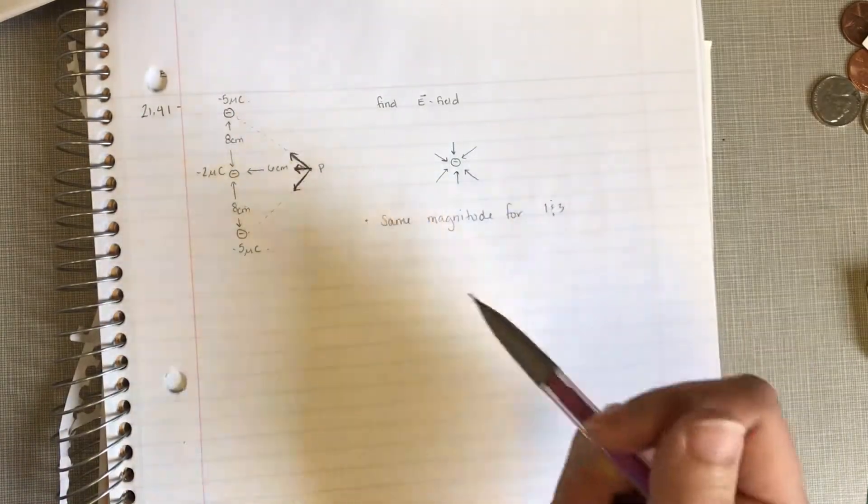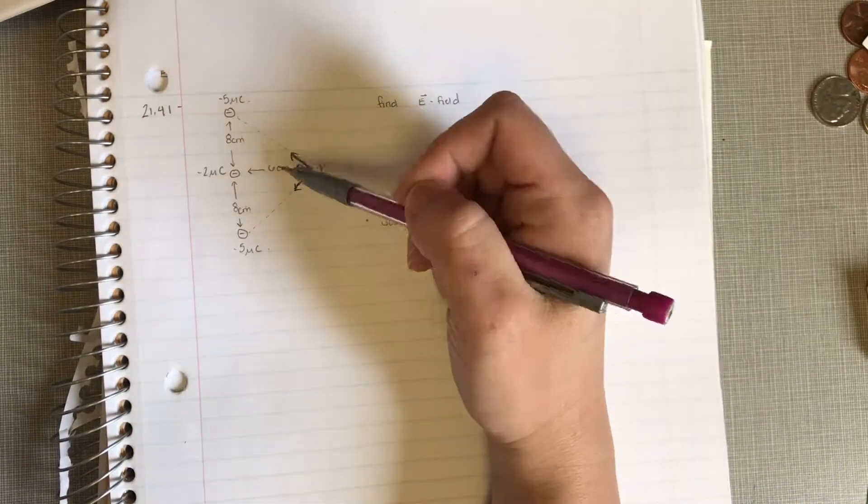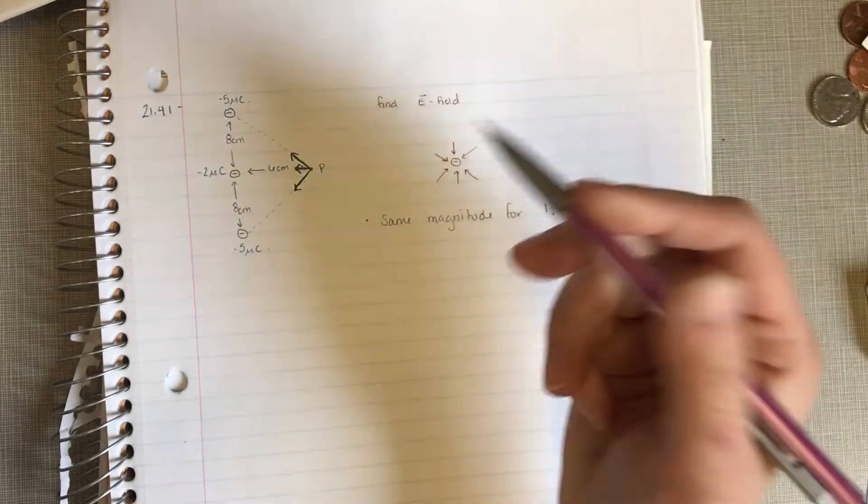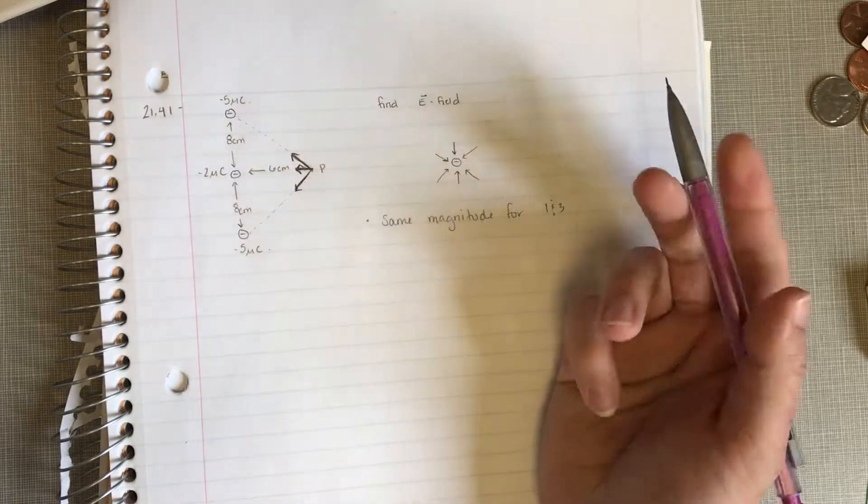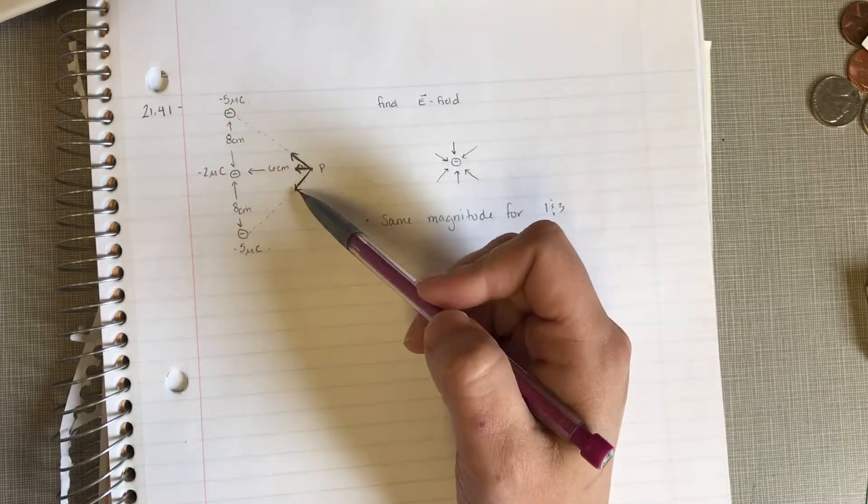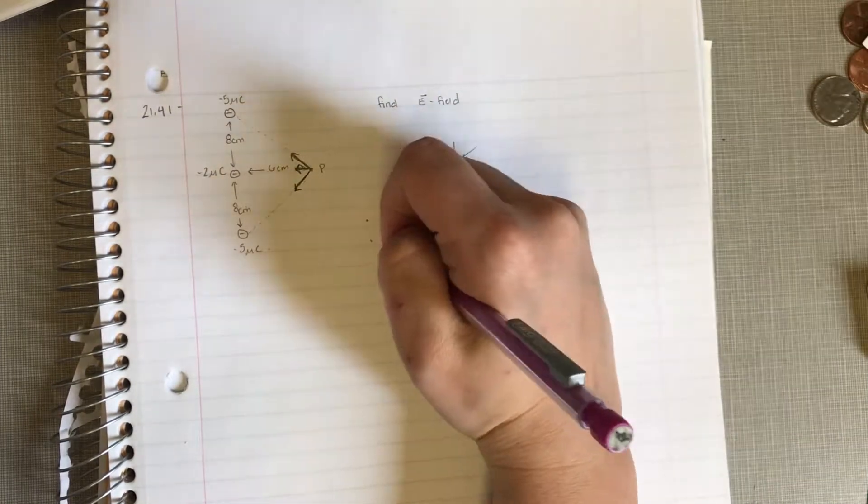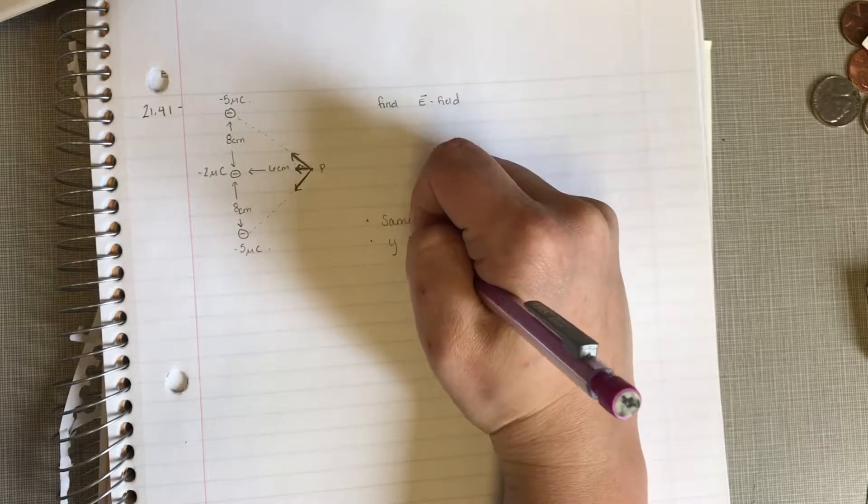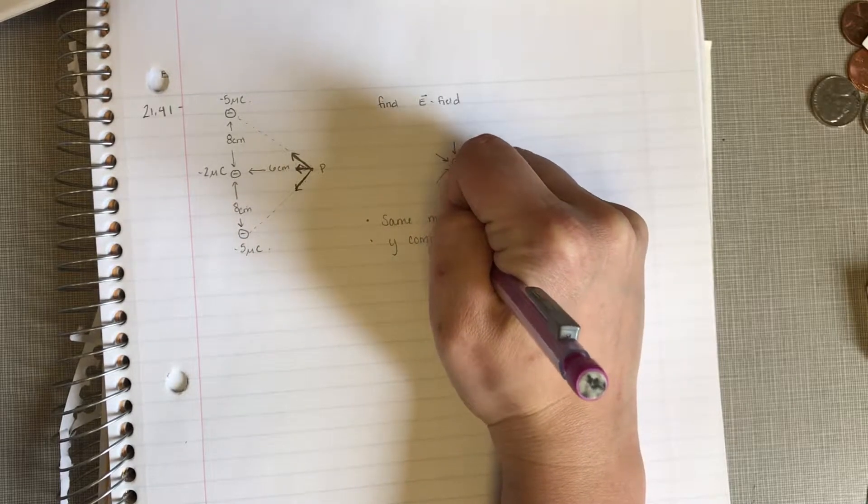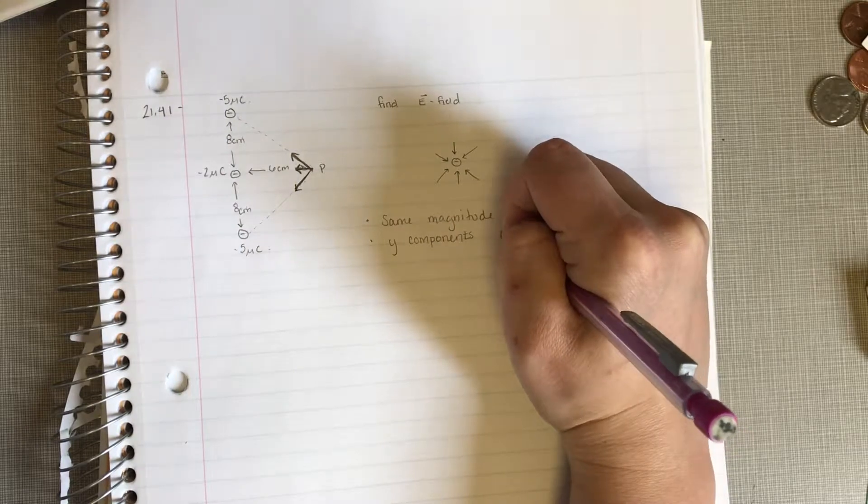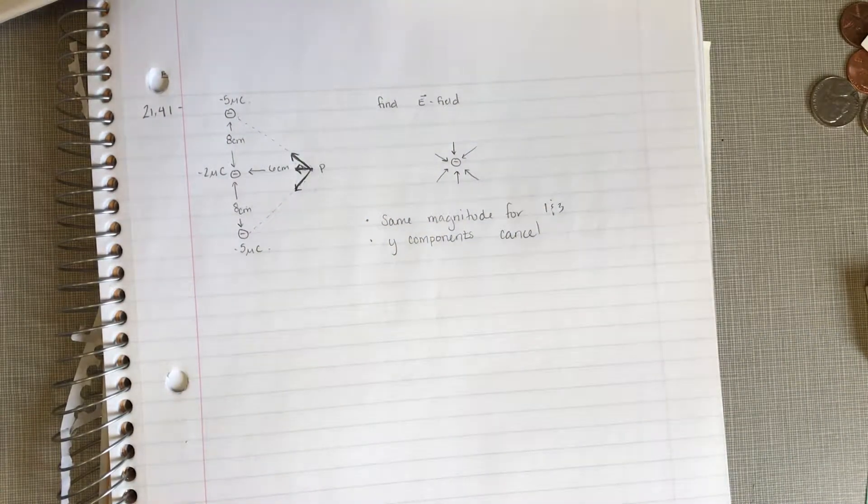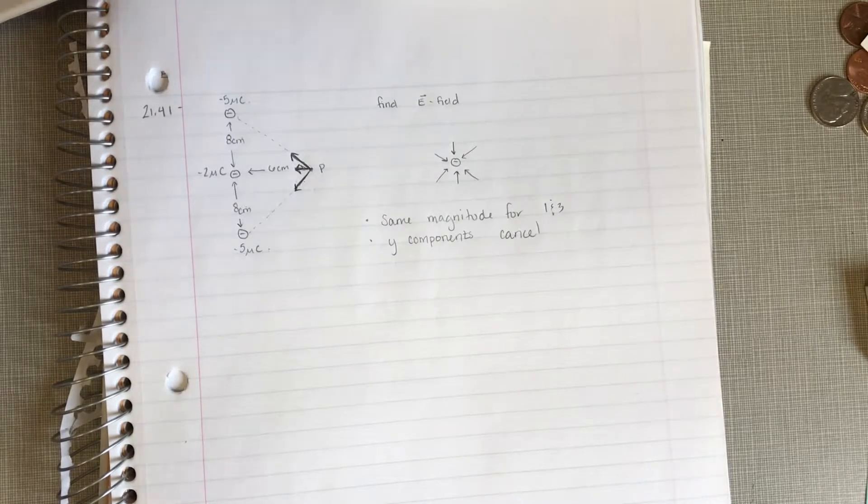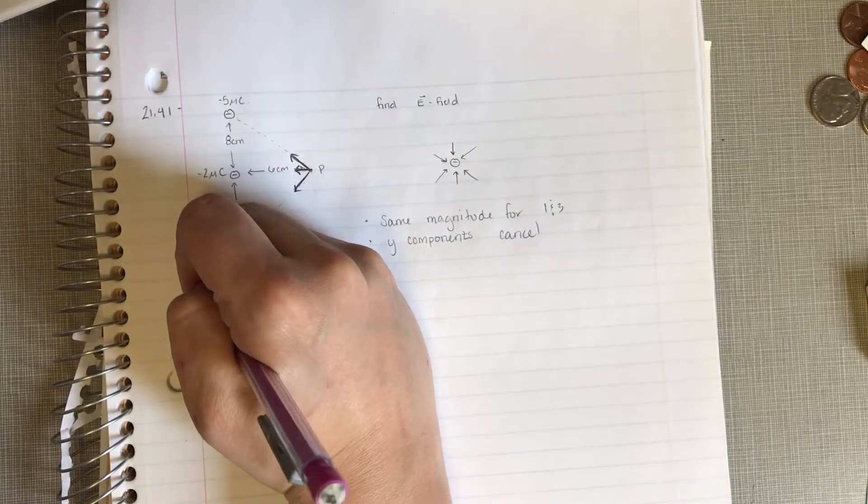So we know that they're going to have the same magnitude. So now because they have the same magnitude and they're pointing in the same direction, we can make the reasonable assumption that these two y components are going to cancel each other out because one's pulling up, one's pulling down. So our y components are going to cancel. So all we have to do is figure out the x components and then add them all together.